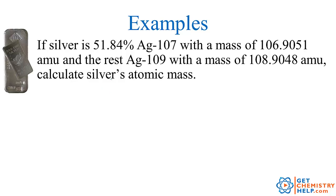Okay, let's try one more example. If silver is 51.84% silver-107 with a mass of 106.9051 atomic mass units, and the rest of it is silver-109 with a mass of 108.9048 atomic mass units, calculate silver's atomic mass. Okay, so we have two different isotopes, and they're not equal. So I need the abundance of silver-107 times the mass of silver-107 plus the abundance of silver-109 times the mass of silver-109. But in this case, they didn't give me a percentage for silver-109. They just told me that the rest of it was silver-109. Well, I know both of these isotopes have to add up to be 100%, of course. So if I subtract out the percentage that was silver-107, then I know the silver-109 has to be whatever is left. So the silver-109 is 48.16%.